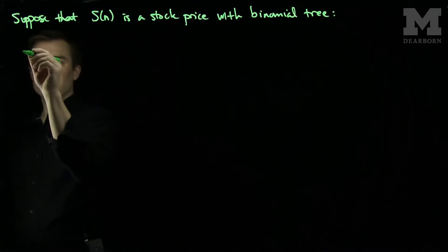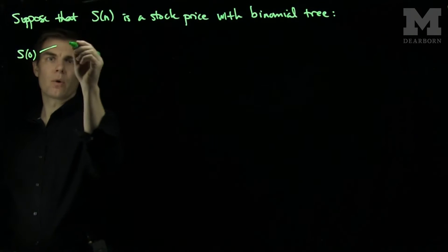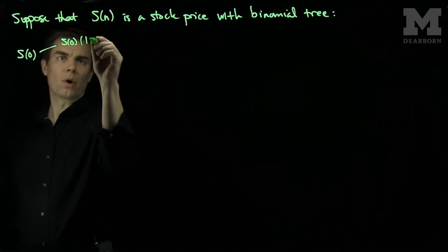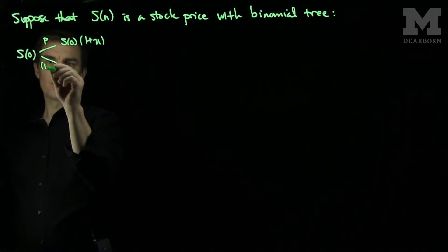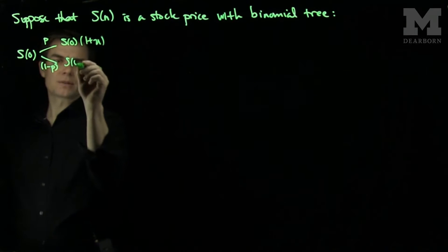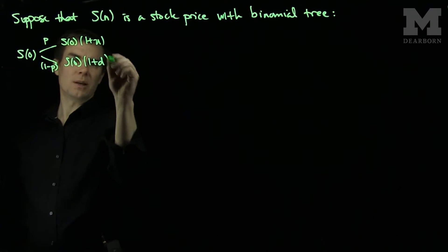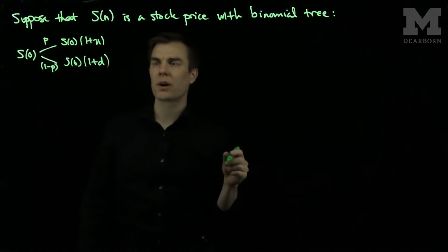And what that means is if I start at S_0, I will go up to S_0(1+U) with probability P, and with probability 1-P I'll go to S_0(1+D), where U is the up rate and D is the down rate.